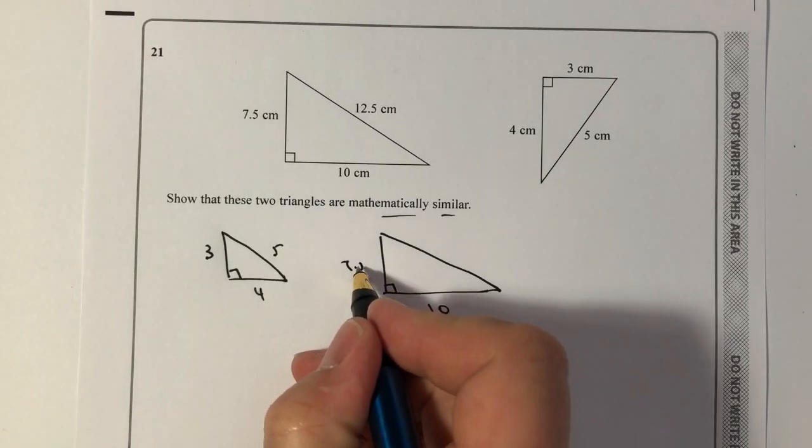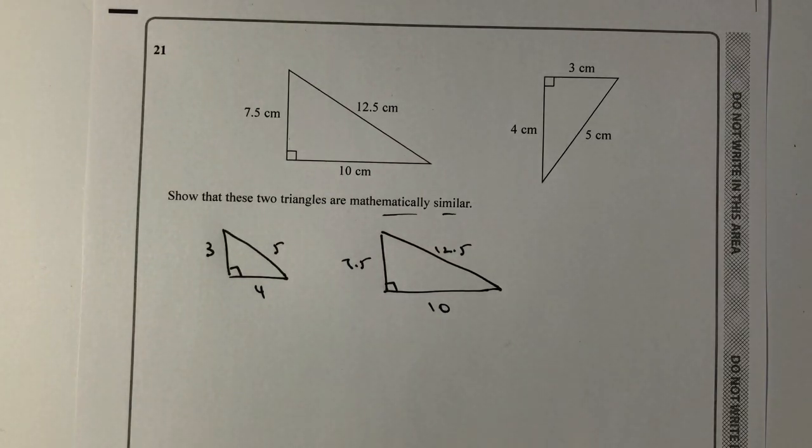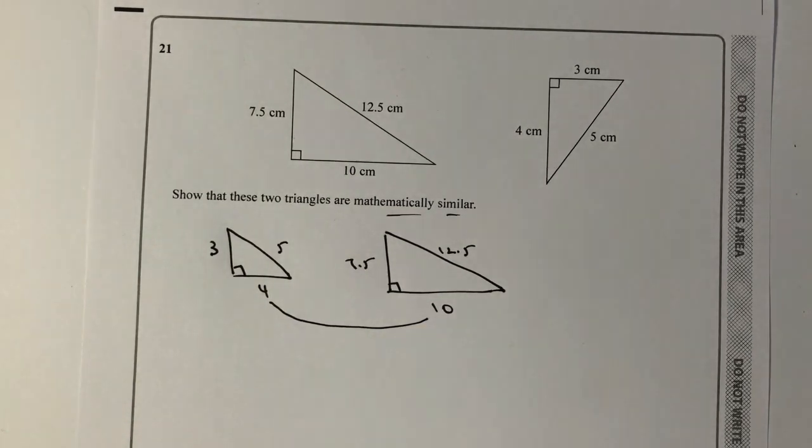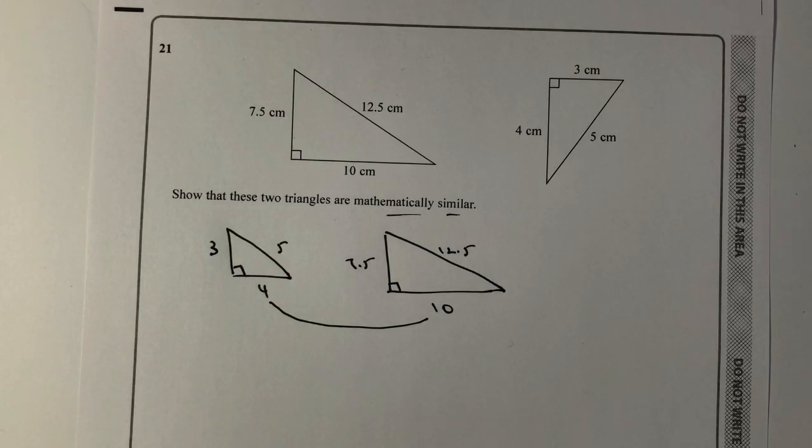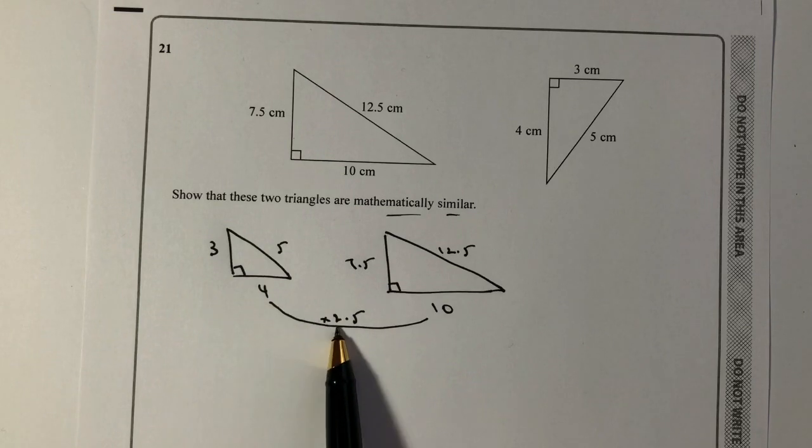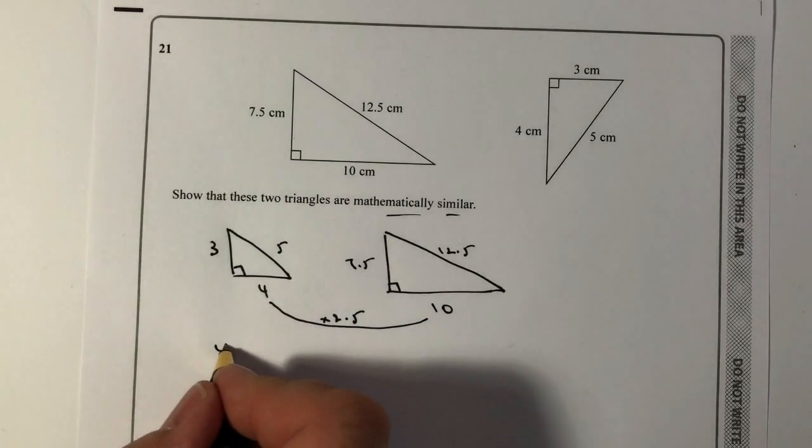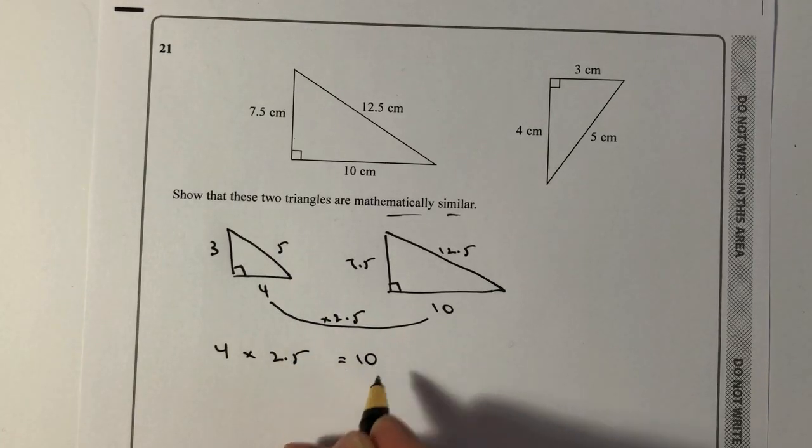What we're saying is that while these angles remain the same, the sides obviously have changed. But what we need to know is how much bigger these sides are. If we look at this, we've got 4 to 10. So what we're saying is what have we multiplied 4 by to get to 10? If you divide 10 by 4, you get 2.5. So what we're saying is if we multiply 4 times 2.5, we get 10.